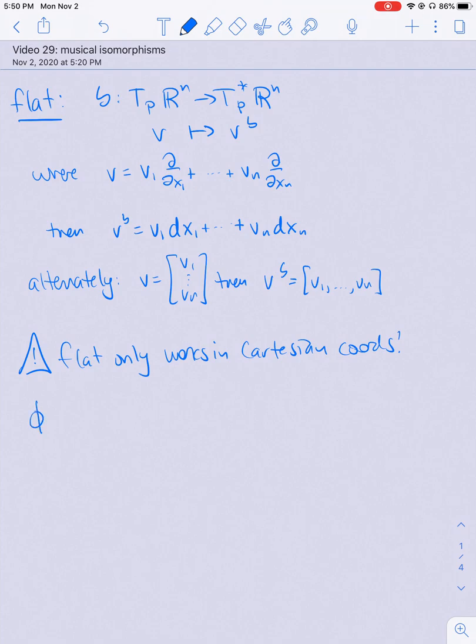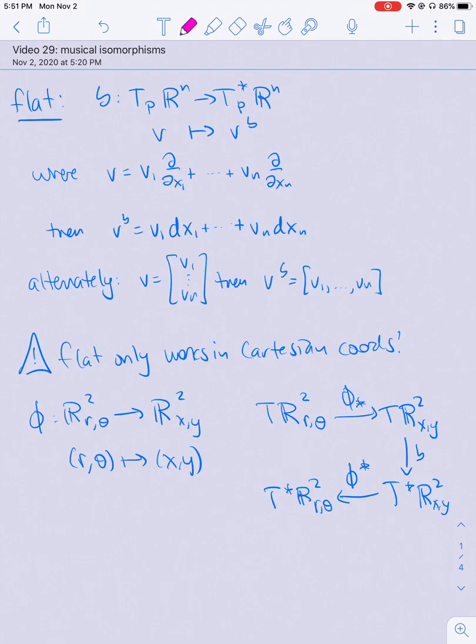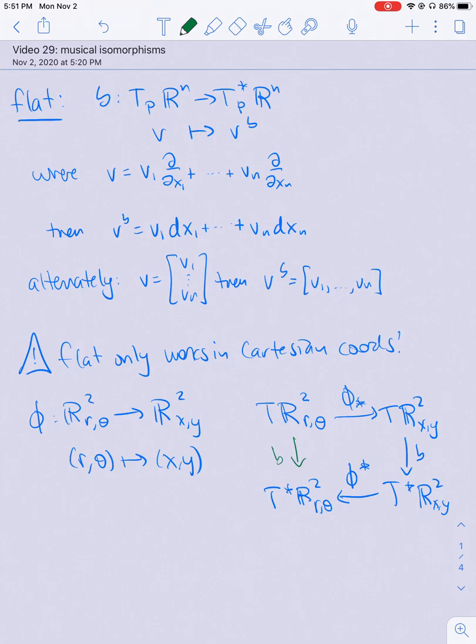So you might expect say if I have a map phi from R^2 for example let's do polar coordinates to R^2 in xy coordinates, so this is our favorite map which takes r theta to xy, then you might expect that I can go from the tangent bundle to R^2 in r theta coordinates and I can push vectors forward from r theta coordinates to xy coordinates, then I can take the flat operator and now I get an element of the cotangent bundle in xy coordinates and then I can take the pullback and I'll get an element of the cotangent bundle in r theta coordinates. And you might expect that some operator, I'll put this in green, the green flat operator doesn't actually exist.